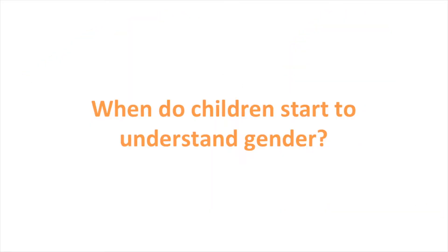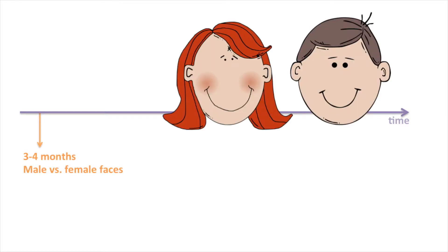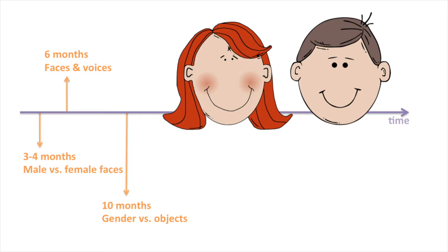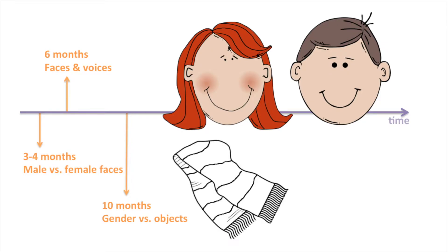So when do children start to understand gender? Babies as young as three to four months old can distinguish between male and female faces. By six months, they are able to discriminate faces and voices by sex. By 10 months, they are able to form stereotypic associations between faces and gender-typed objects such as a scarf or a hammer.